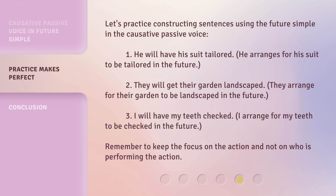Let's practice constructing sentences using the future simple in the causative passive voice. 1. 'He will have his suit tailored.' — He arranges for his suit to be tailored in the future. 2. 'They will get their garden landscaped.' — They arrange for their garden to be landscaped in the future. 3. 'I will have my teeth checked.' — I arrange for my teeth to be checked in the future. Remember to keep the focus on the action and not on who is performing the action.